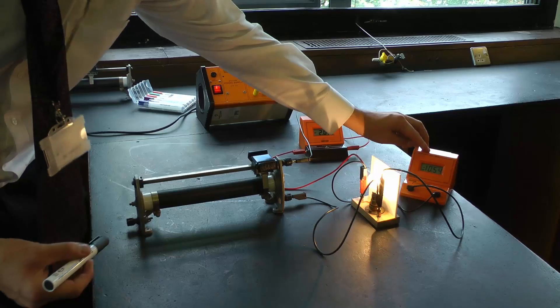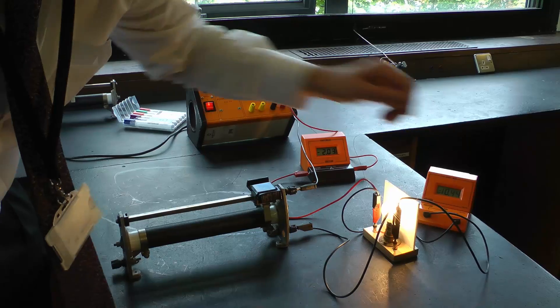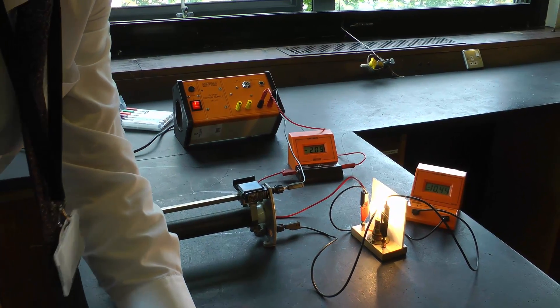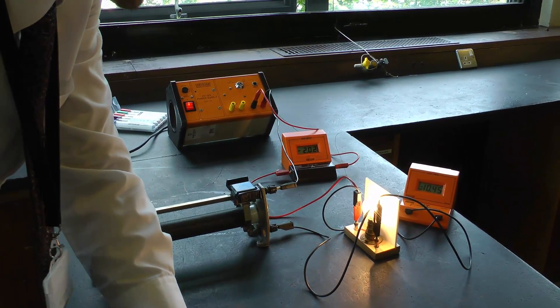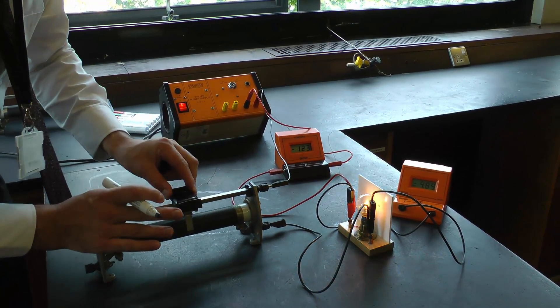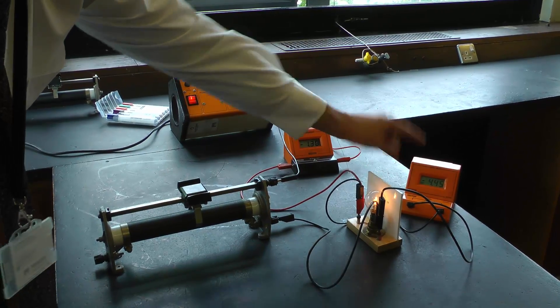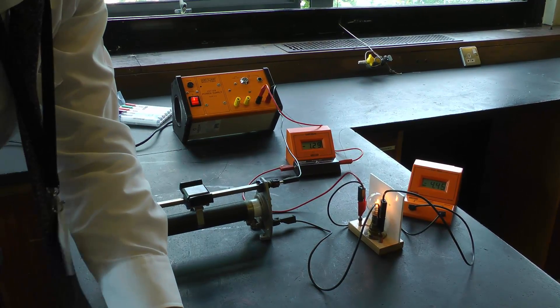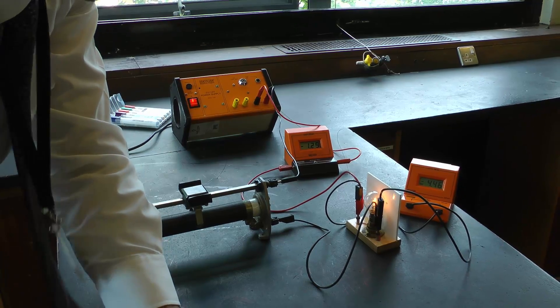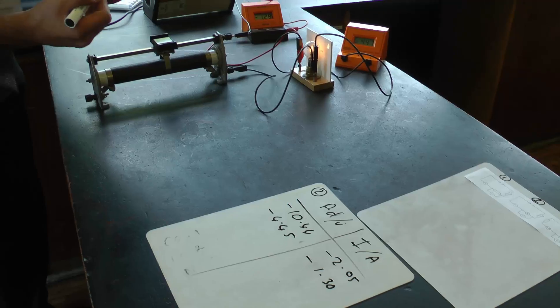Switching on. I'm starting negative this time around, I'll switch it around in a second. Minus 10.44 volts gives me a value of minus 2.05 amps. Change the voltage again: minus 4.45 gives me a value of minus 1.30 amps.